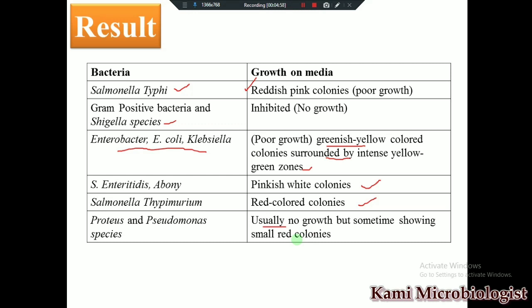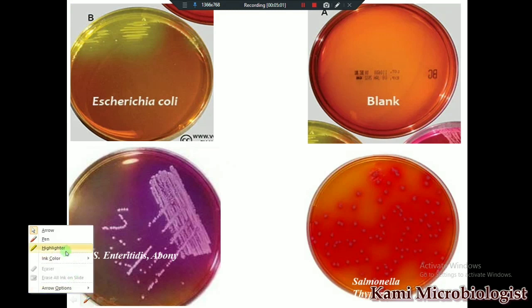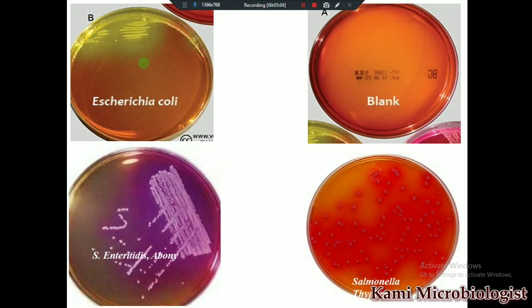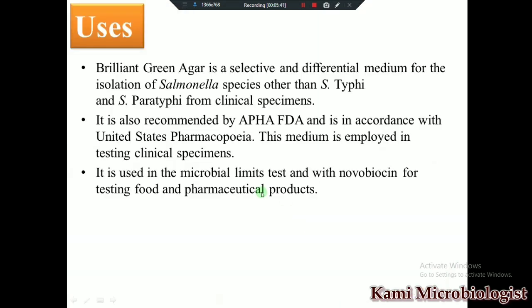As you can see in the images, E. coli and Klebsiella have similar growth. The blank plate shows what the uninoculated media looks like. The pinkish colonies are Salmonella enteritidis and abony. Salmonella typhimurium, Proteus, and Pseudomonas show similar colony morphology, but Proteus shows swarming while Pseudomonas colonies are smaller and produce a pungent smell.